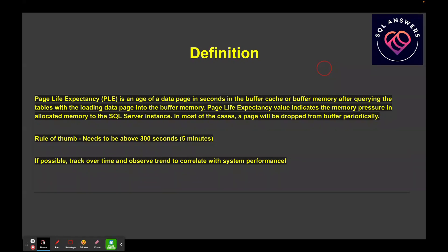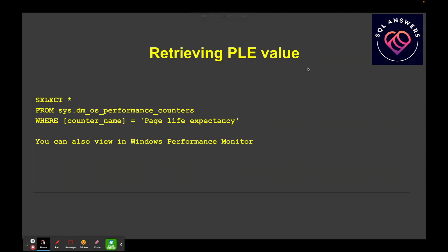It's very good practice to track this value over time and correlate it with your system performance. Here I'm showing a query that allows you to retrieve the current page life expectancy value. This is a DMV view — dm_os_performance_counters — and the counter name is page life expectancy. You can also monitor this in Windows Performance Monitor if you prefer. If you want to capture this, you can take the results of this query and put it into a table, add a capture date onto it, and then track it over time so that you can look at trending.